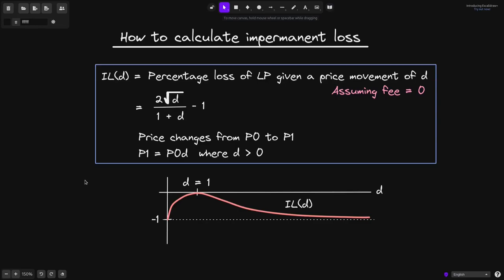In this video, I'll explain how to calculate impermanent loss in a constant product AMM. We'll say that IL of D is equal to the percentage loss of LP given a price movement of D. When the price moves by D, we can calculate the impermanent loss to be 2 times the square root of D over 1 plus D minus 1. Here we're assuming that the trading fee is equal to 0.